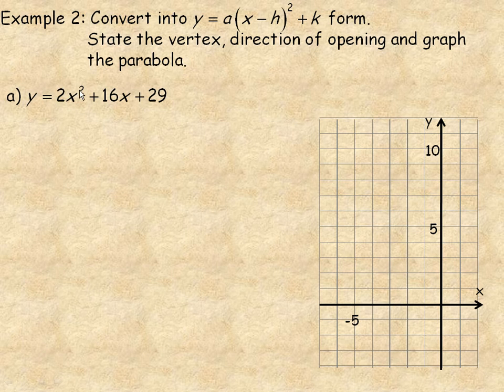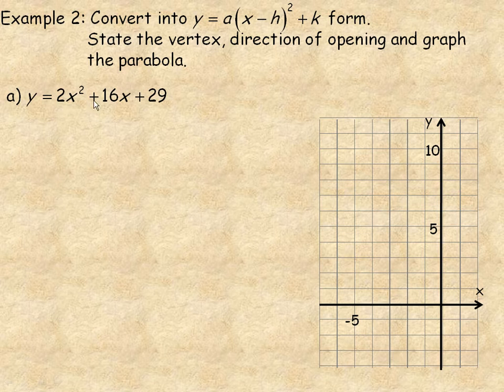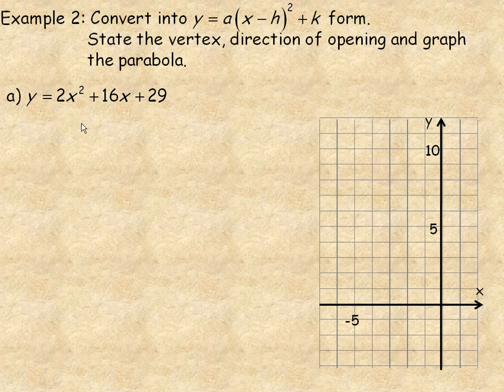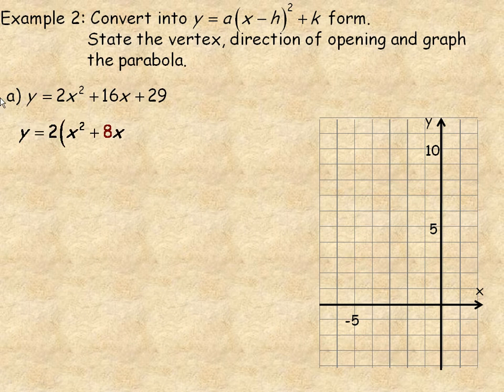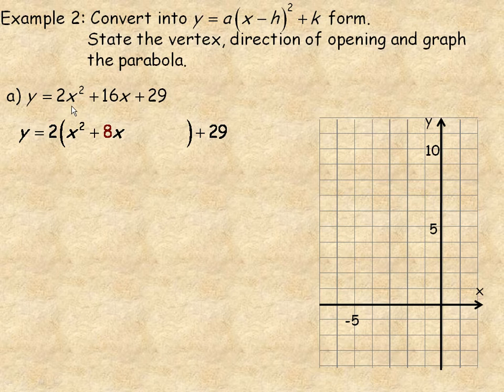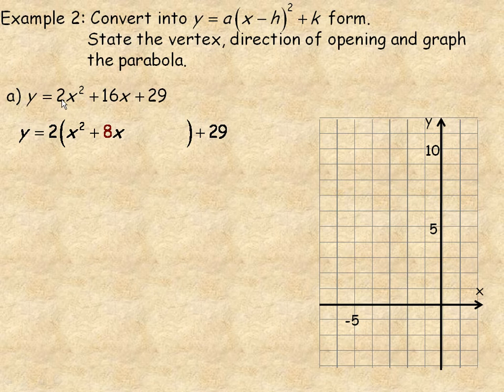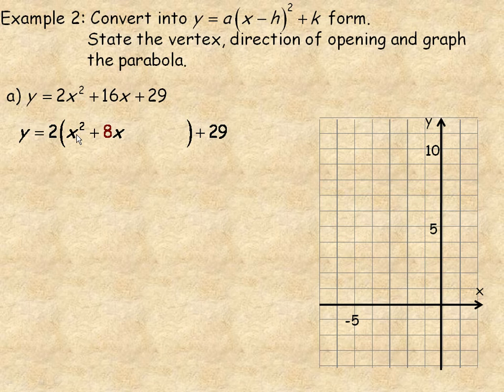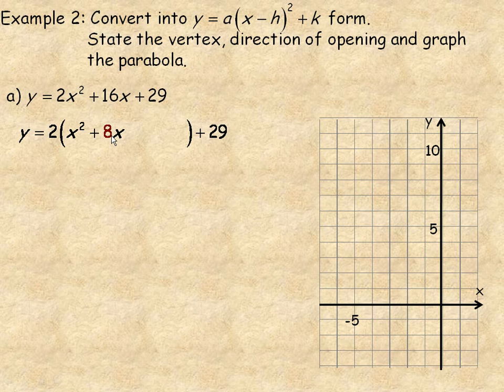Notice there is 2x² here, so I would factor a 2 out of the terms that have x's in them—not the constant on the end, not the 29, just the 2x² and 16x. There actually is a common factor of 2x in the first two terms, but I don't want to factor the x out, just the coefficient of the x². So I factor a 2 out of 2x² to get x², and if I factor a 2 out of 16x, I'll get 8x.